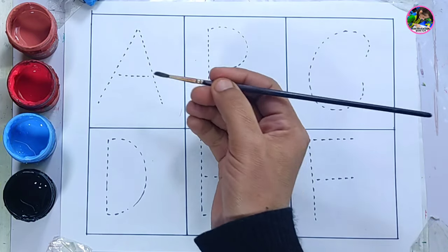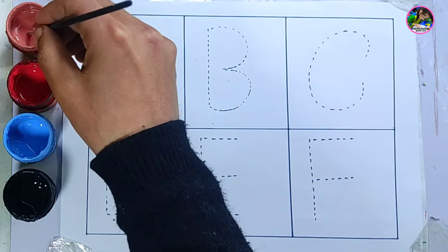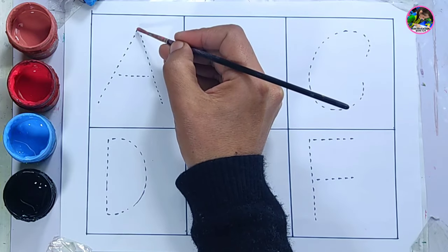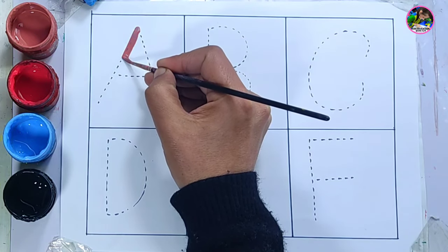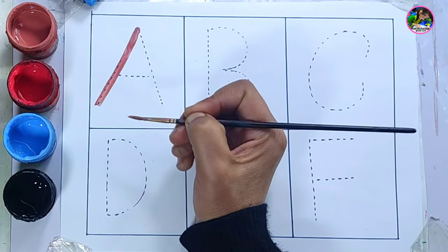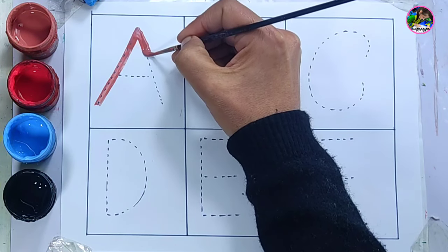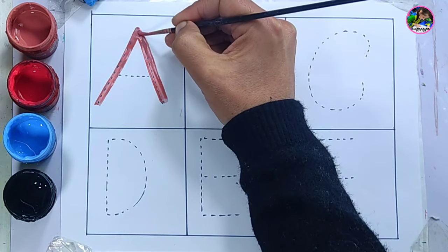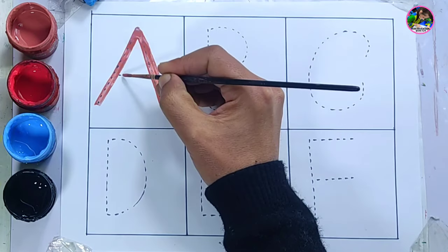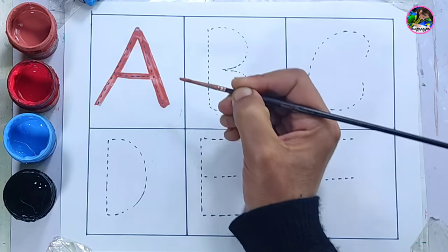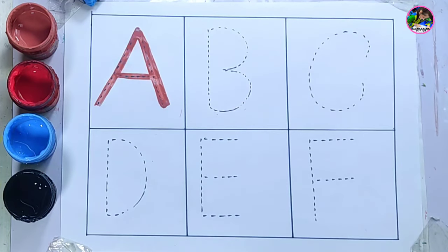So the first color is brown. Let's do letter A. What are we learning, children? Letter A. A is for apple. Apple means seb. This is letter A. A is for apple.